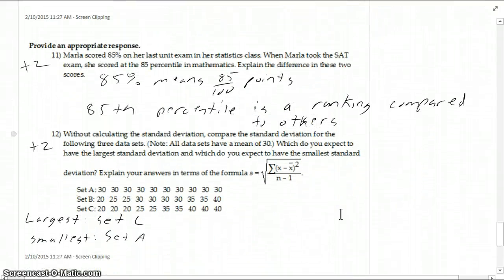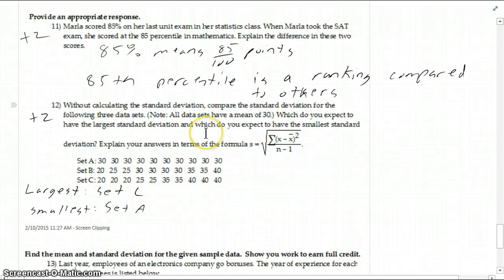Number 11 here, what's the difference between, I think everybody got this right actually. 85% means that's 85 out of 100 points, or it's related to the points on that test, or 85th percentile is comparing them in a ranking compared to other people that took the test.